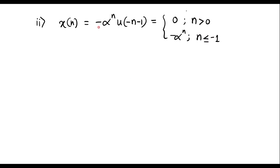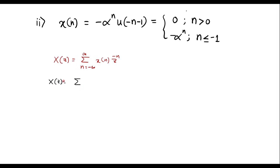Now let me take the second example. Here X of n is equal to minus alpha power n, u of minus n minus 1. Here X of n value is 0 for n greater than or equal to 0, and its value is minus alpha power n if n is less than or equal to minus 1. Let me find the Z-transform of this. We know that Z-transform is defined as X of Z equal to summation n equal to minus infinity to infinity of X of n times Z power minus n.